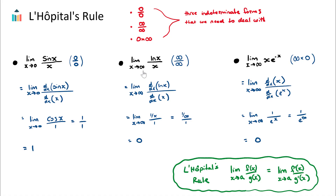Let's try example two: the limit as x approaches infinity of the natural log of x over x. Let's substitute in infinity for x. The natural log of infinity is just infinity, and we have infinity on the bottom. So we get infinity over infinity — that's another strange answer.